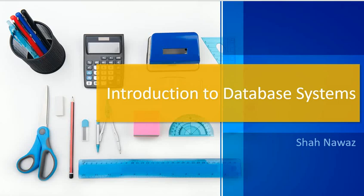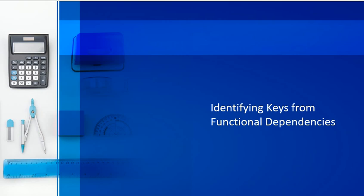The topic we are going to discuss today is Identifying Keys from Functional Dependencies. We know that there are different types of keys in a table or relationship, such as primary key, foreign key, candidate key, composite key, and super key, which we have already read before.